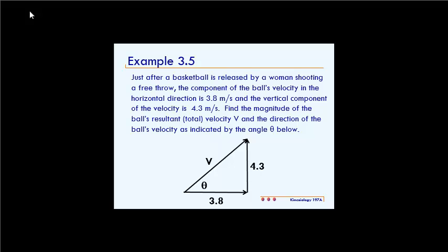angle theta below. So let's redraw the full body diagram that we have. We know that the total velocity component is the hypotenuse, and we know that there's a horizontal component and a vertical component given.